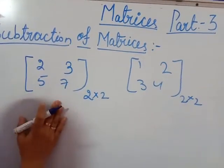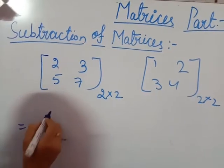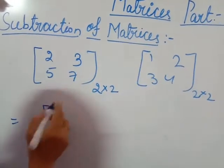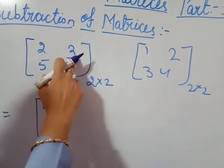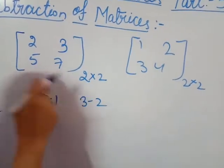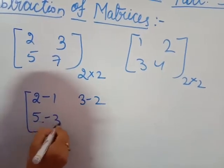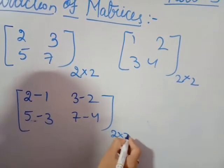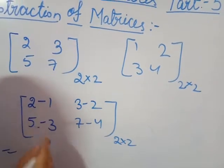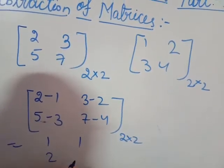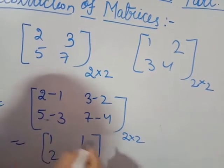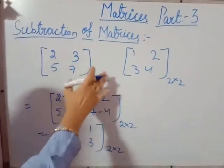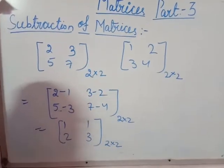You have to subtract the corresponding elements. Here 2 and 1, so write 2 minus 1. Here 3 and 2, so write 3 minus 2. Here 5 and 3, so 5 minus 3. Here 7 and 4, so write 7 minus 4. You will again get a 2×2 matrix: 2−1=1, 3−2=1, 5−3=2, 7−4=3. Subtraction of a matrix of a given order gives a result matrix of that same order.